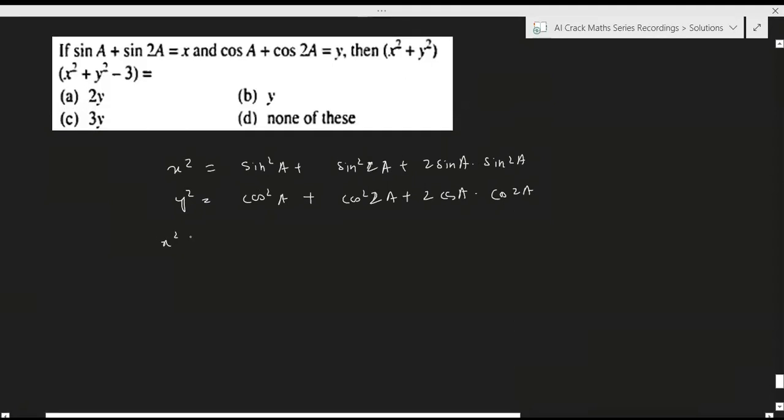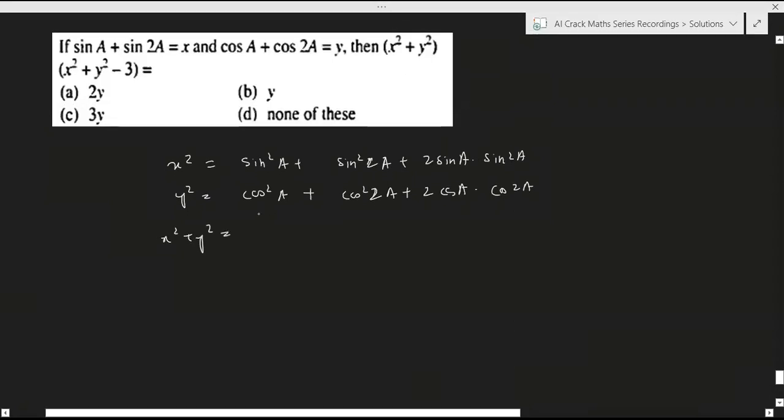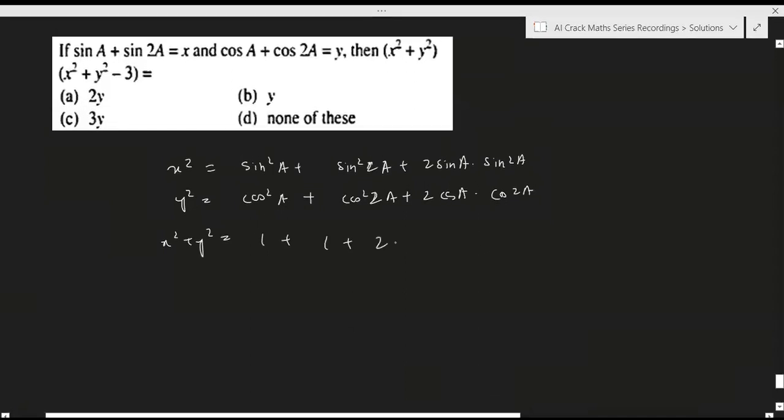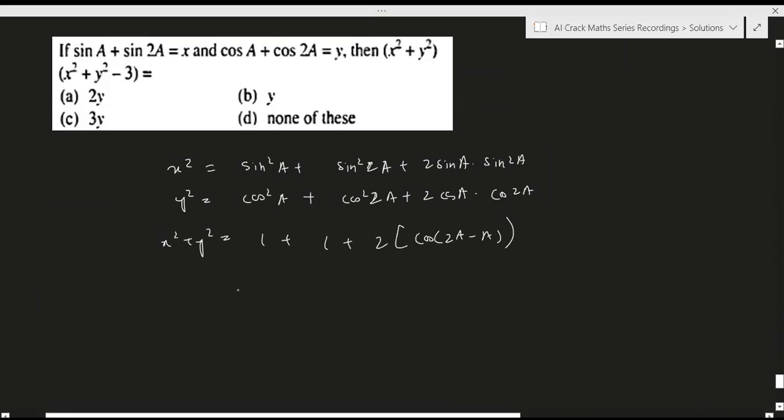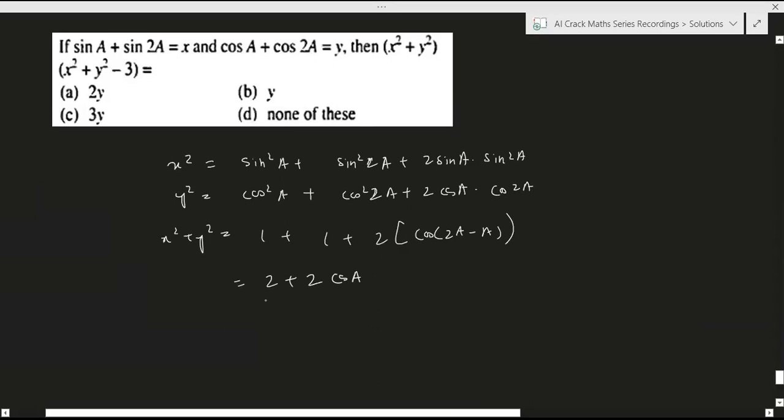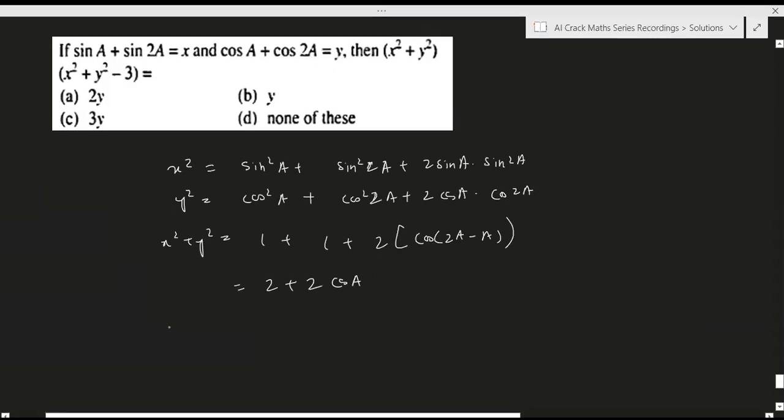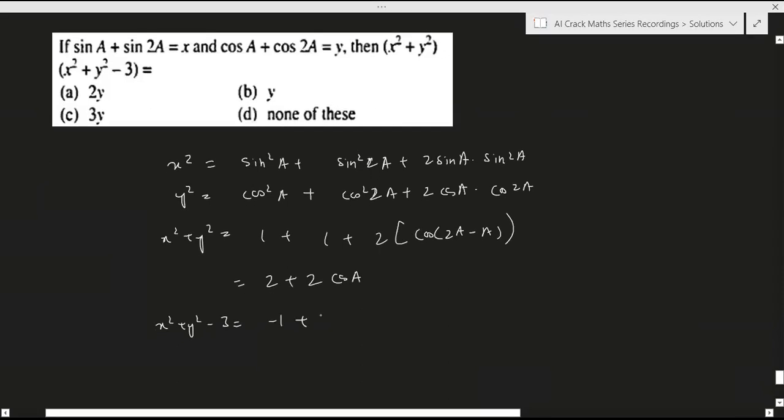Now let's add both of them, then x squared plus y squared equals 2. This is 1, this is also 1, and this becomes 2 cos of 2a minus a. In case of x squared plus y squared minus 3, we get minus 1 plus 2 cos a.